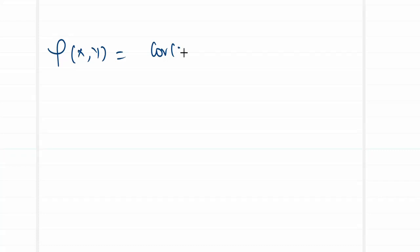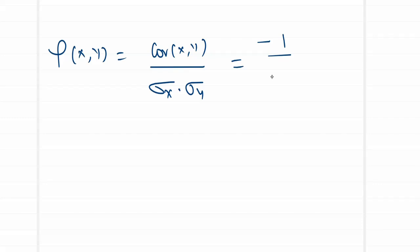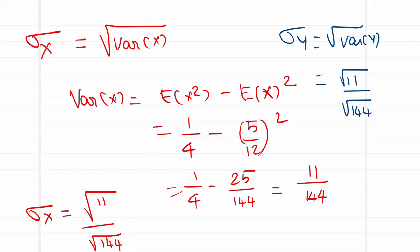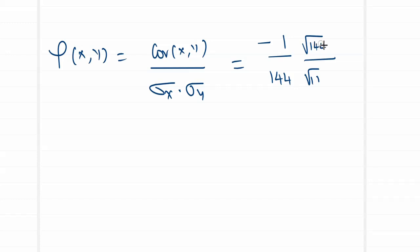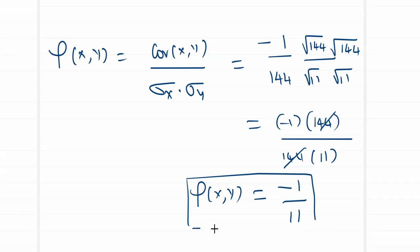Now for the final value: ρ(X,Y) = Cov(X,Y) / (σ_X · σ_Y). The numerator is -1/144. The denominator is (√11/12) · (√11/12) = 11/144. So ρ(X,Y) = (-1/144) / (11/144). The 144s cancel, leaving ρ(X,Y) = -1/11.